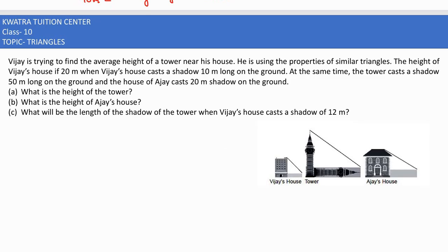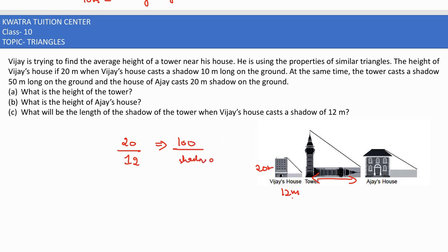Thirdly, we need to find the length of the shadow of the tower when Vijay's house casts a shadow of 12 meters. The actual height of Vijay's house is 20 meters, and the tower's height was found to be 100 meters. We set up the proportion: 20 over 12 is equivalent to 100 over the shadow of the tower. We need to find the shadow of the tower in the denominator for comparison.